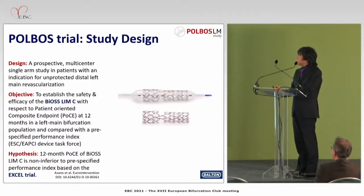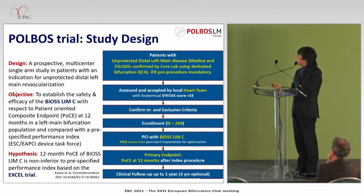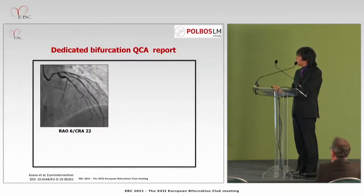The Polvos trial was designed as a prospective multicenter single-arm study in patients with an indication for unprotected distal left main revascularization. The objective was to establish safety and efficacy of the BIOS-3MC stent with respect to patient-oriented composite endpoint. Enrollment was placed on hold due to COVID-19 since March 2020. One inclusion criterion was confirmation of stenosis — angiographic diameter stenosis of at least 50% — confirmed by offline QCA using dedicated bifurcation QCA software by an academic core lab. Investigators sent images to the academic team, who performed dedicated bifurcation QCA analysis.